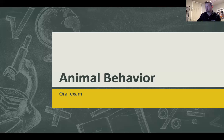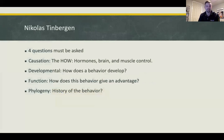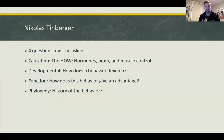Today we're going to start with the animal behavior exam, beginning with the four questions of Nikolaas Tinbergen. This is your basis for how you look at animal behavior. There are four questions that must be asked: causation, developmental, function, and phylogeny.